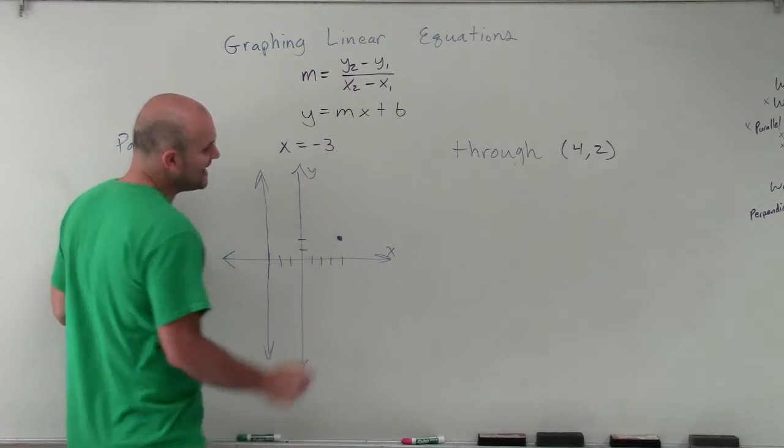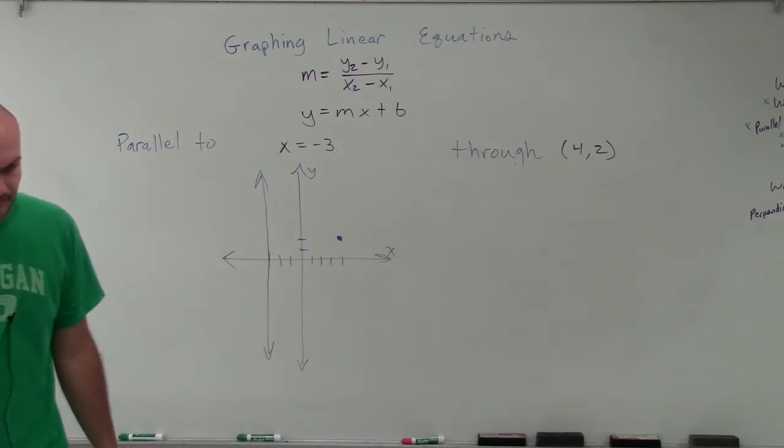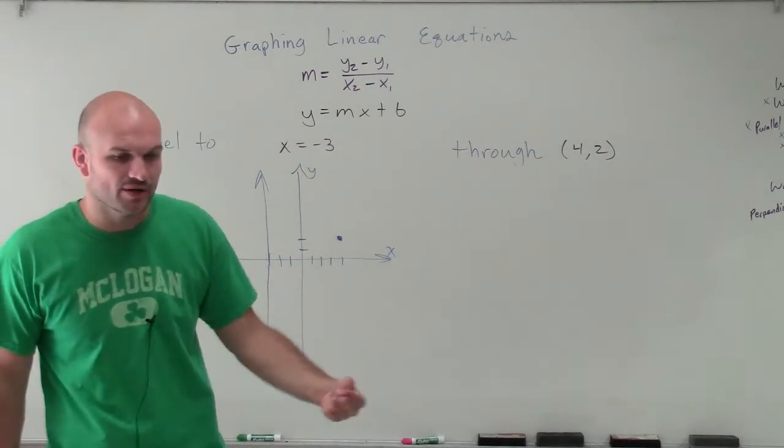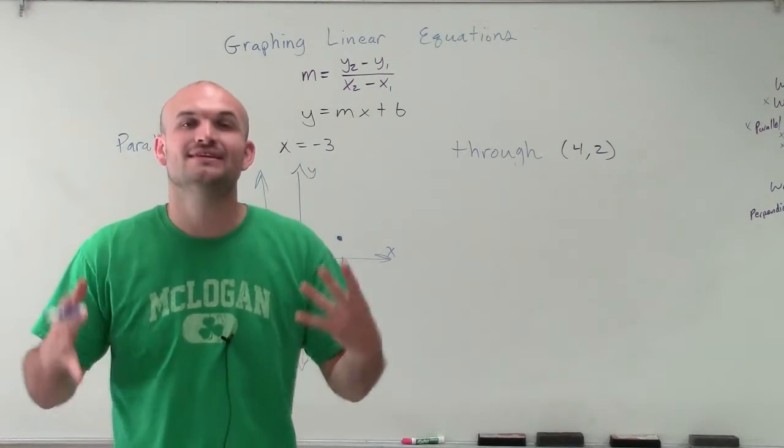So what I need to do is find a line that's going to be parallel to this line. Now, remember, parallel lines have exactly the same slope, right?